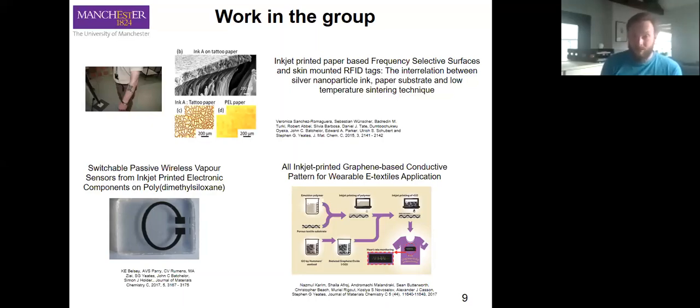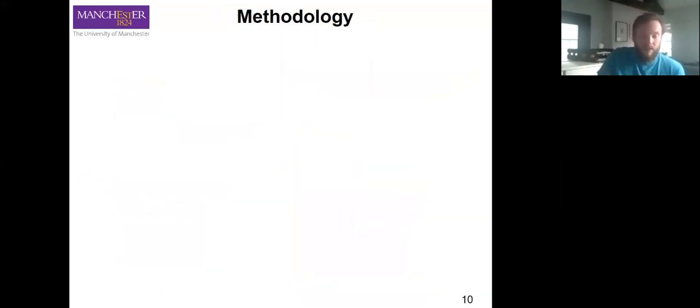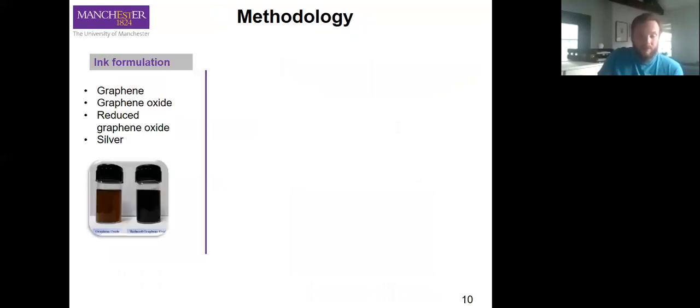We're starting to move towards some really usable applications, but we have to consider: how do we pre-treat our fabrics? Our methodology in general involves ink formulation—graphene, graphene oxide, and rGO, silver—this is some of the most available.